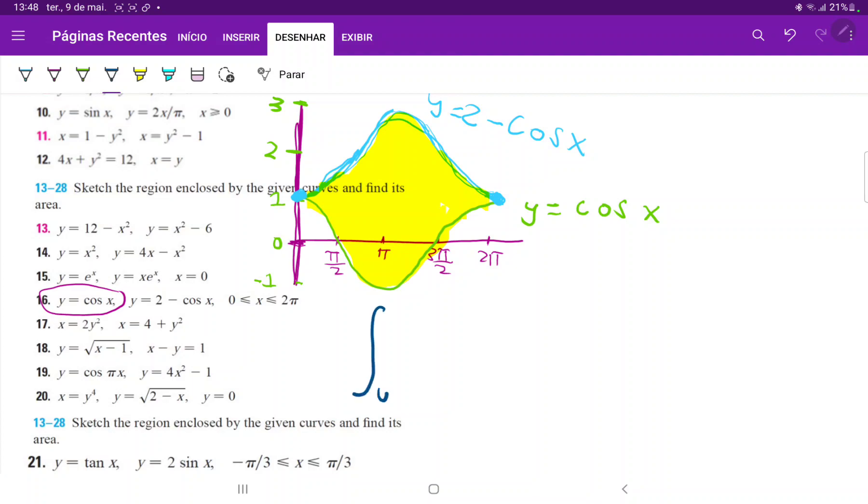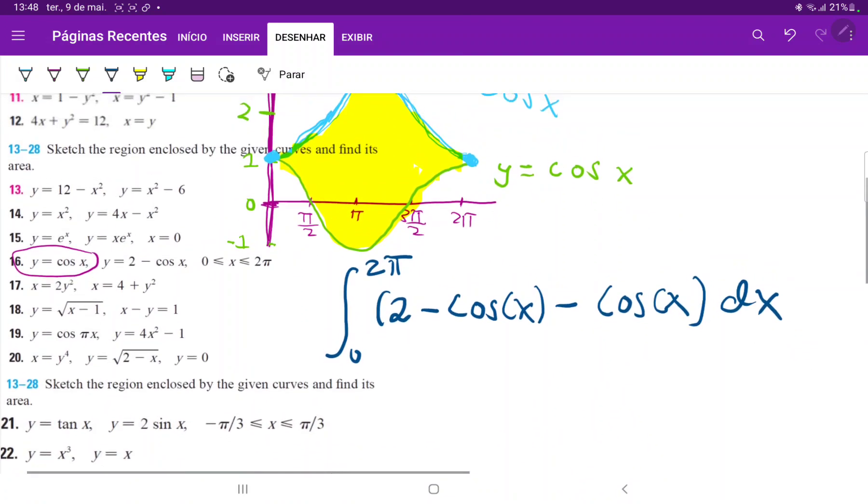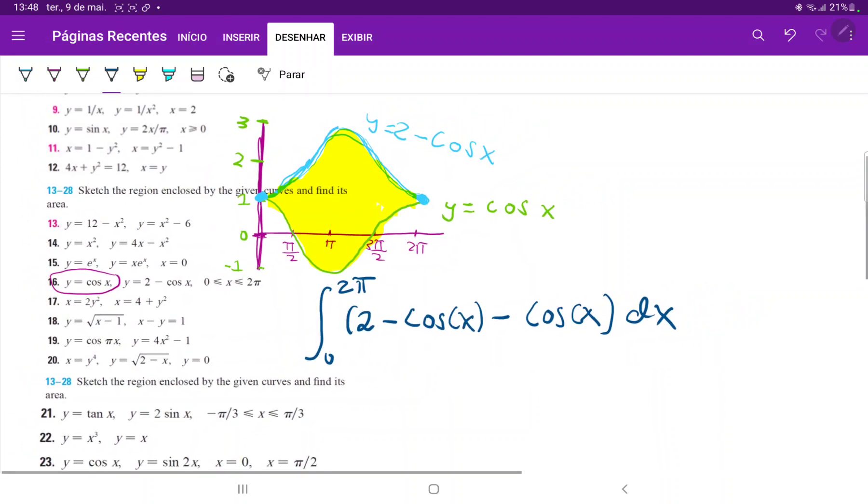So it is the integral from 0 to 2 pi of the upper function, 2 minus cosine of x, minus the lower function, so minus cosine of x, and all of this times dx. So let's clean this up a little bit before we integrate. This is equal to the integral from 0 to 2 pi of 2 minus 2 cosine of x dx.